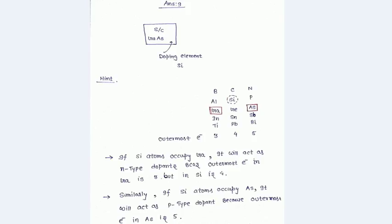In the given question, the semiconductor is made by gallium arsenide and the doping element is silicon. Gallium has three outermost electrons and silicon element has four outermost electrons. This is an extra amount of electrons.